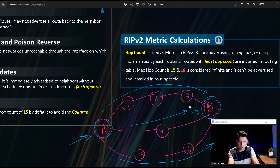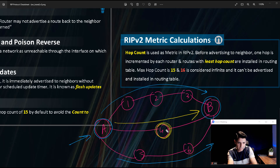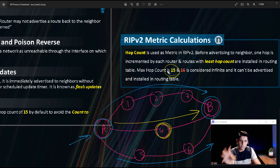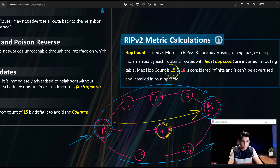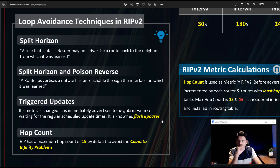RIP 2's path selection is very straightforward — no complex calculations like OSPF or EIGRP. It simply chooses the path with the fewest number of hops. So the middle path with only one router will be selected. The maximum hop count is 15; after 15 hops, the route is considered unreachable and unreliable. This is how RIP 2 does its metric calculation.